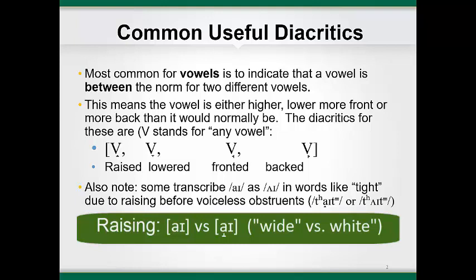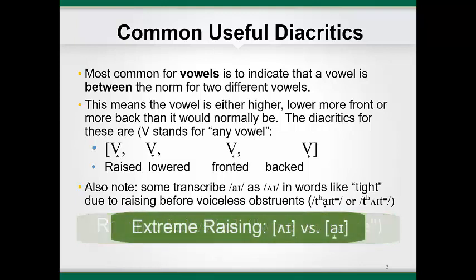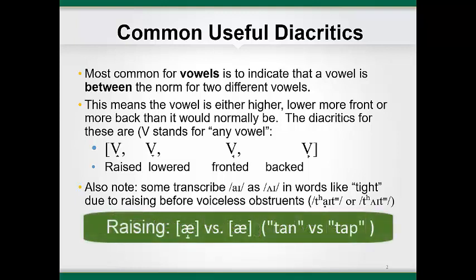You can use the raising diacritic on the first part of the diphthong to indicate the change in jaw height. Sometimes the raising is great enough that some people would transcribe it as a phonemic substitution, using turned V instead of the normal transcription. Vowels are also often raised before nasal consonants, especially with AH in certain dialects. The AH in 'tan' or 'thanks' might be raised compared to AH preceding non-nasal consonants. Listen to the difference in AH in 'tan' versus 'tap': tan, tap.